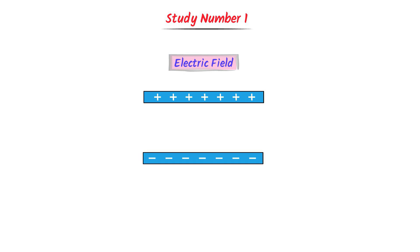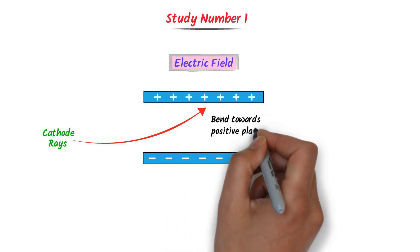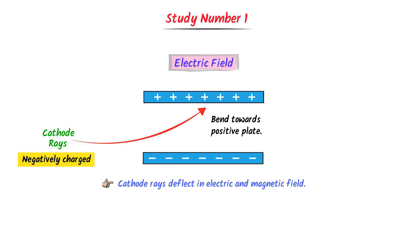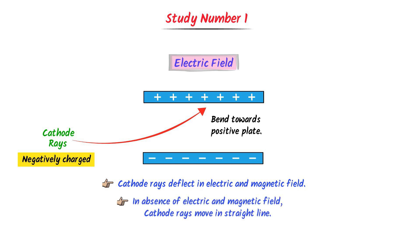Now we will further study the behavior of cathode rays. Consider this electric field — passing cathode rays through the electric field, we observe that cathode rays bend towards the positive plate. We know that opposite charges attract. The cathode rays bend towards the positive plate because they are negatively charged. So we learn that cathode rays are negatively charged. Also, cathode rays deflect in an electric field and a magnetic field; in the absence of electric and magnetic fields, they move in a straight line.